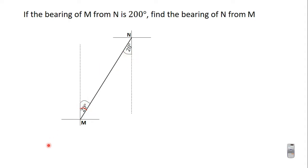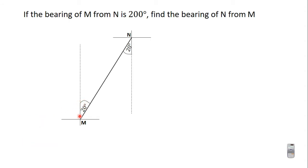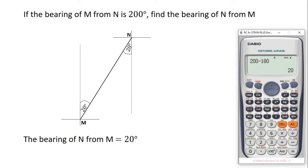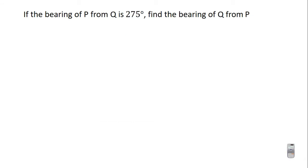From the angle properties of parallel lines, the angle created here and the angle created here are alternating angles, and alternating angles are equal. So if here is 20 degrees, this side is also 20 degrees. The bearing of N from M is measured from the north line straight onto this line, giving us 20 degrees. So the back bearing of N from M is 20 degrees, exactly what we found using the formula.